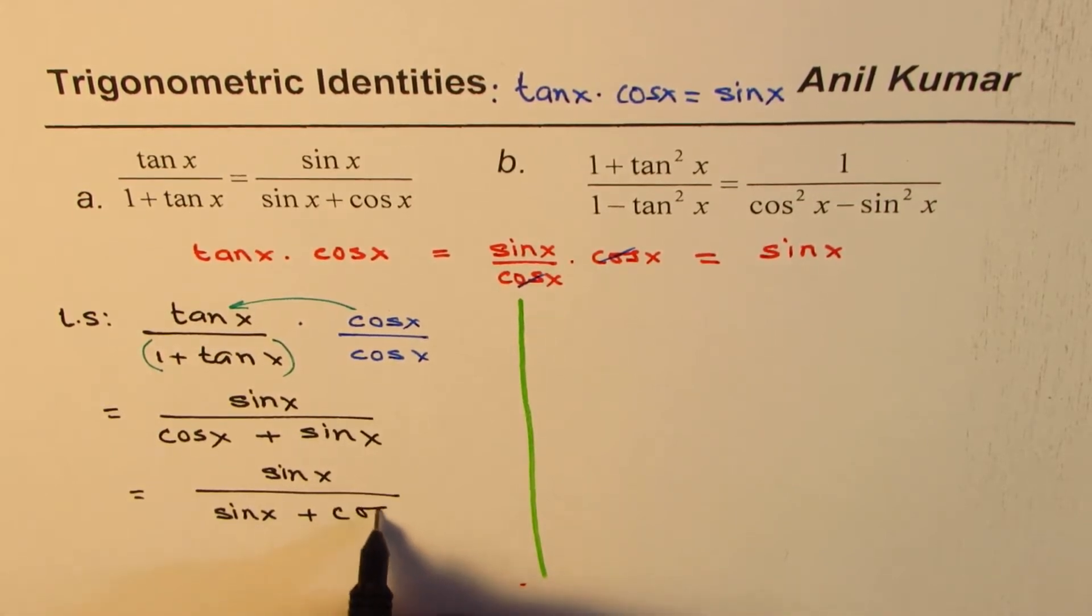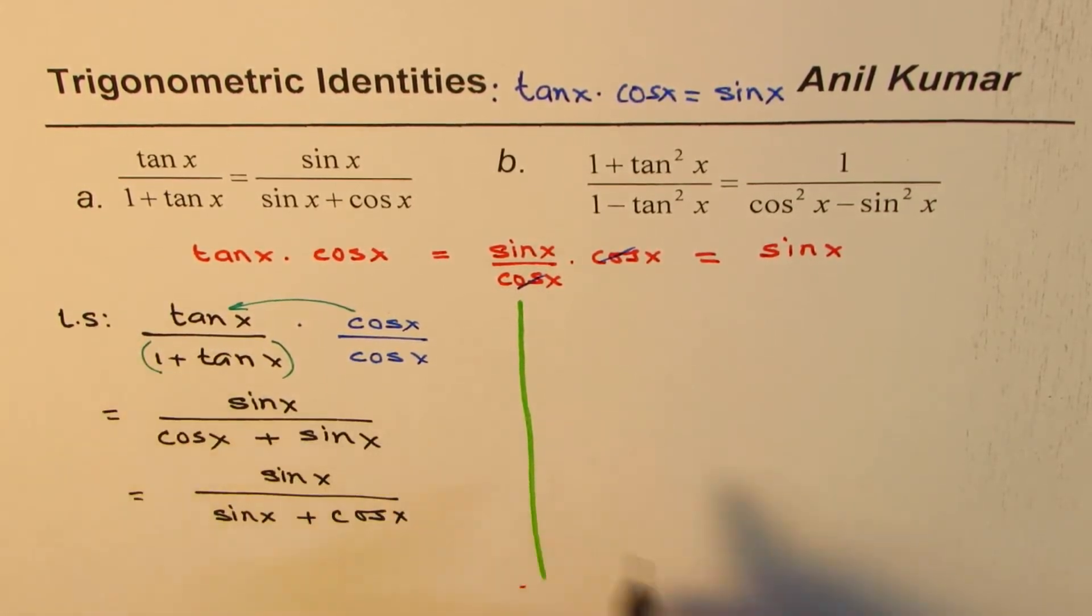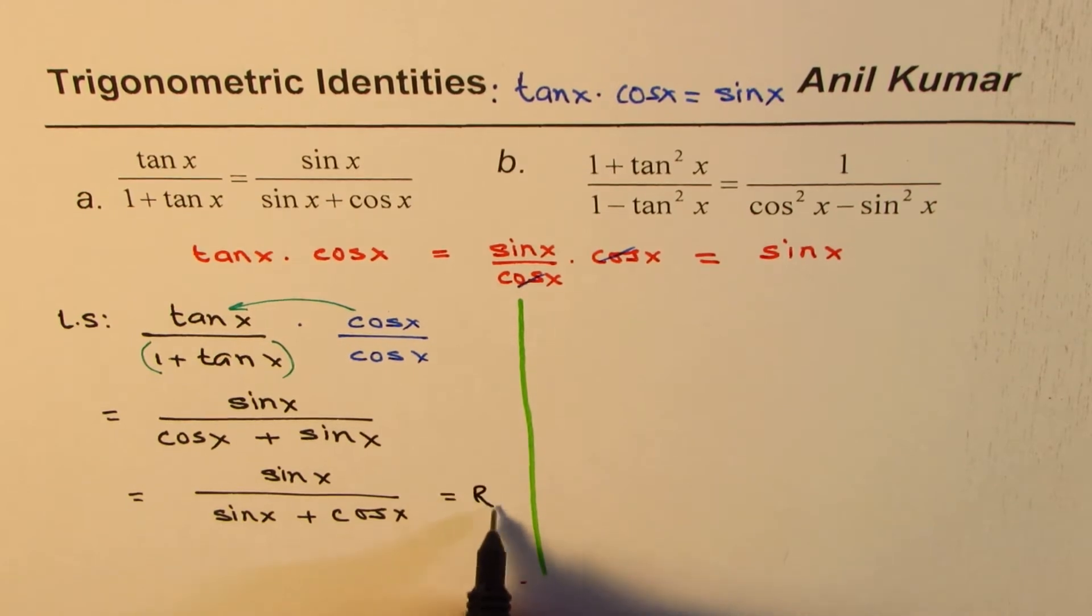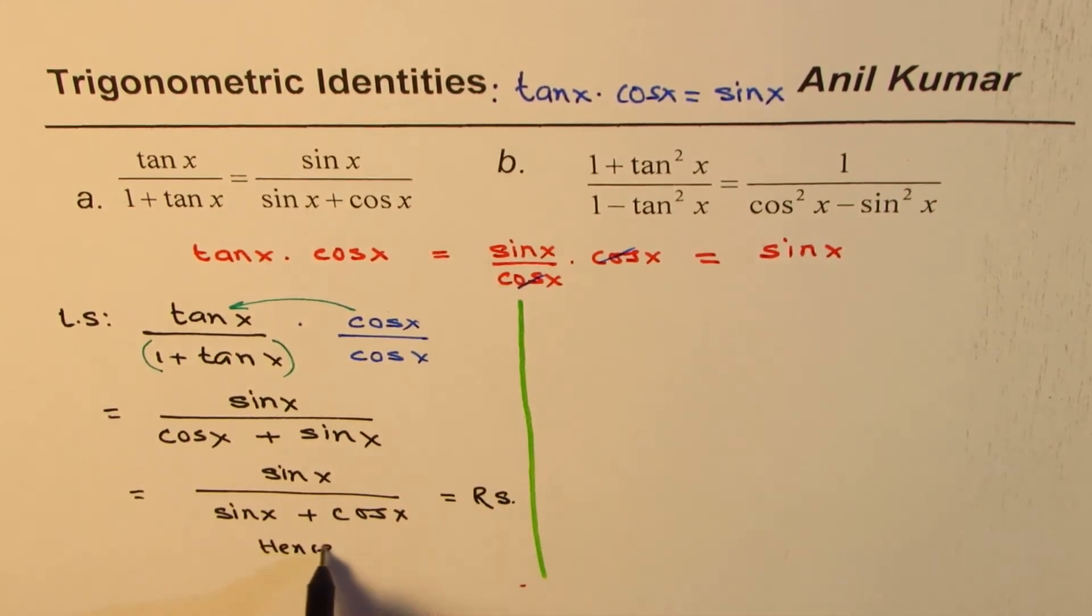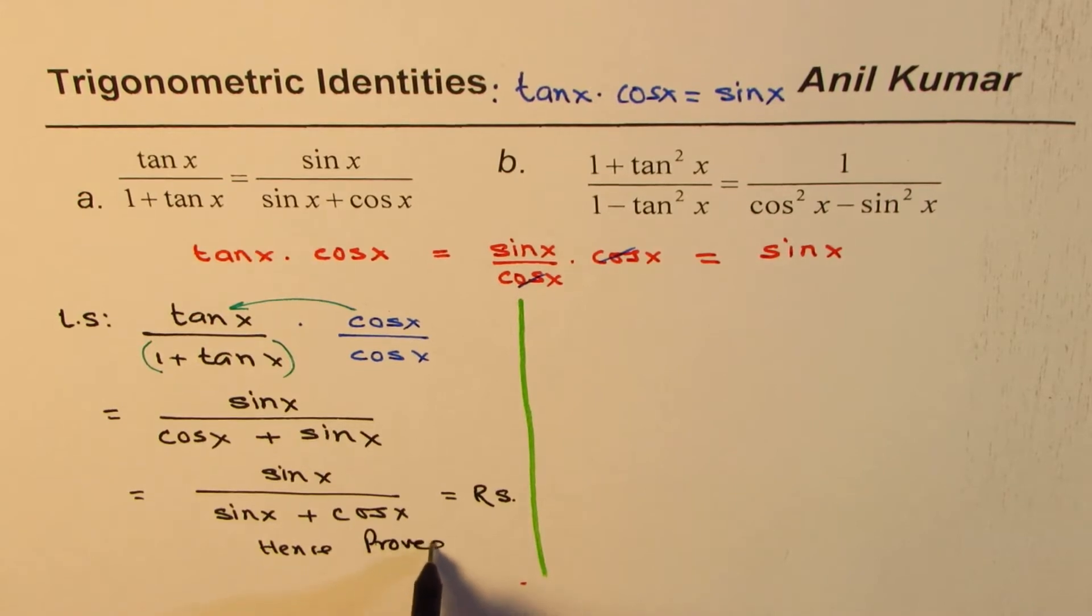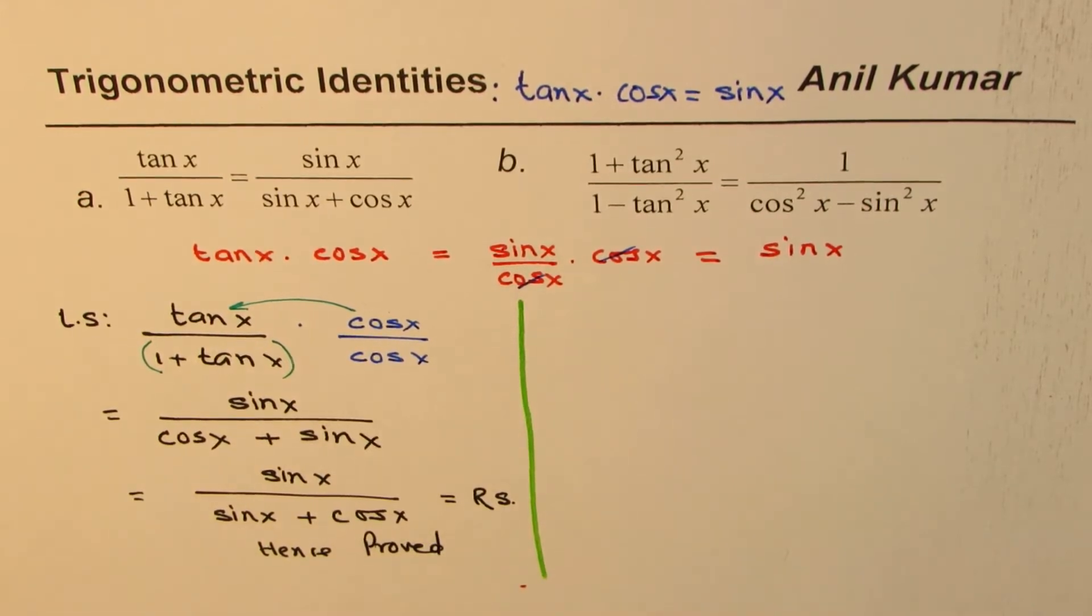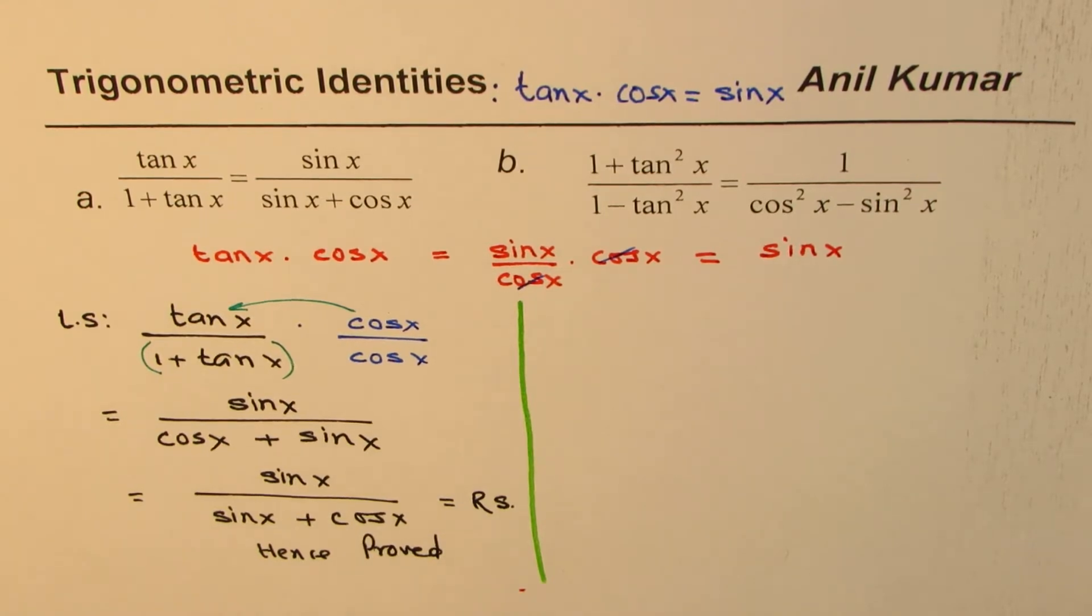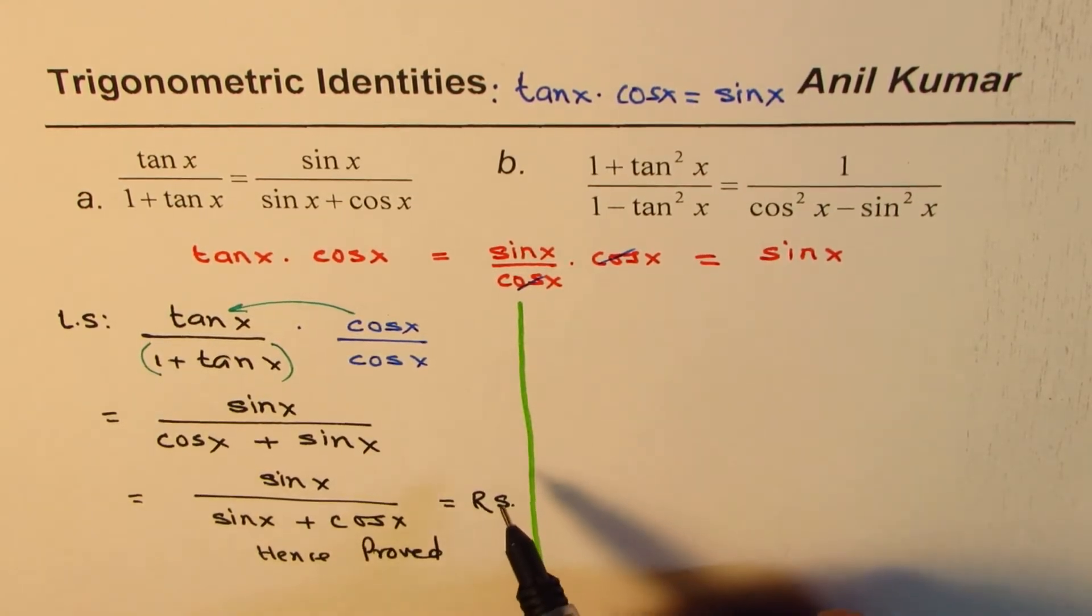And now, I could conclude that this left side is equal to right side, hence proved. The identity. As simple as that. Do you see that? Do you appreciate it?